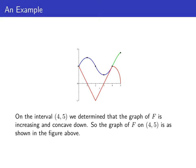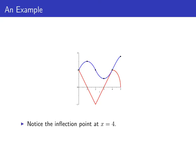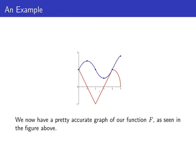Finally, on the interval from 4 to 5, big F is increasing and concave down, and there's an inflection point at x equals 4. So we've drawn, based on the global information about big F and the fundamental theorem of calculus, a pretty accurate graph of our antiderivative big F that passes through the point (0, 1).